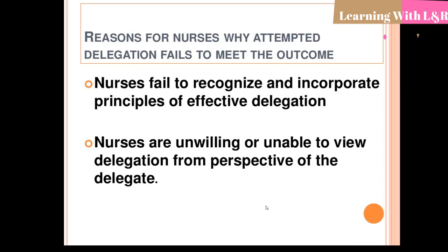Reasons why attempted delegation by nurses fails to meet outcomes: nurses fail to recognize and incorporate principles of effective delegation. Nurses are unwilling or unable to view delegation from the perspective of the delegate — they act according to their own experience, not considering the perspective or aim of the person distributing the work.